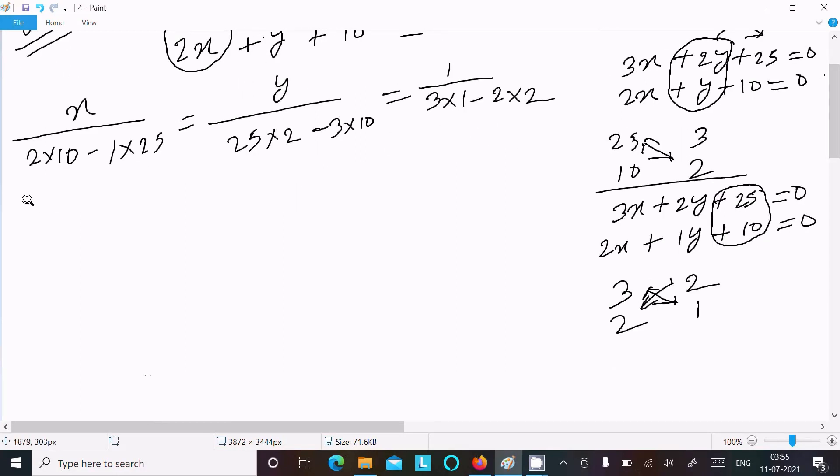Next we can easily achieve the output by solving this. So x: 2 into 10 is 20, minus 25. Here y: this is 50 minus 30. Here 3 minus 4. So x is minus 5, y is 20, and here this is minus 1.